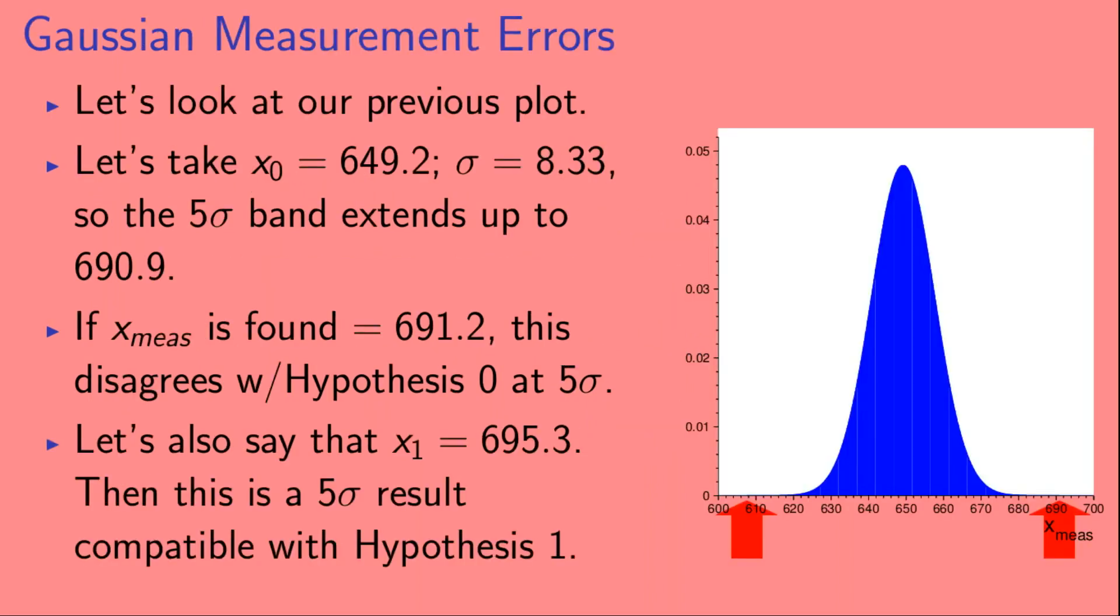Okay, so let's look at our previous plot. Let's take x0 to be 649.2 and sigma equal to 8.33. So the 5 sigma band extends up to 690.9. If x_meas is found to be 691.2, this disagrees with hypothesis 0 at 5 sigma. Let's also say that x1 is equal to 695.3. Then this is a 5 sigma result compatible with hypothesis 1.